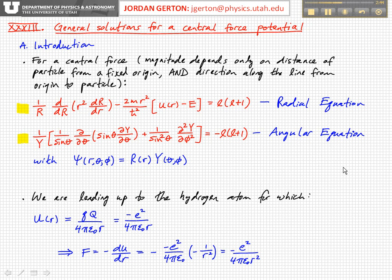And it's important to realize also where we're going with this. We're basically leading up to the hydrogen atom for which the potential energy is equal to minus E squared over four pi epsilon naught R, where E is the fundamental charge on an electron, and R is the distance between the electron and the positively charged nucleus in the hydrogen atom. And you can see that it is indeed a central force.